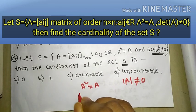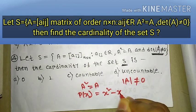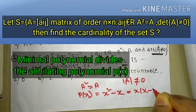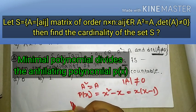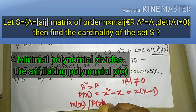If we write this in the form p(x), we get the result, and if we factorize, we get x times (x minus 1). We know that the minimal polynomial divides the annihilating polynomial p(x).